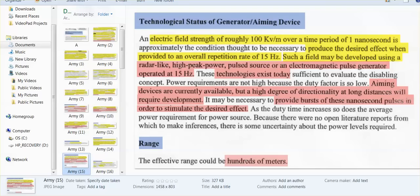So they can do this with radar-like high-peak power pulse source or an electromagnetic pulse generator. The technologies exist today. They know exactly how much pulses they need, at what speed, at what hertz to get their desired effect. They have aiming devices that were available in 1998, but in 30 years time, trust me, they now have, it's easy. Now, they can produce these bursts, these nanosecond pulses, in order to stimulate the desired effect very easily. The range is far.